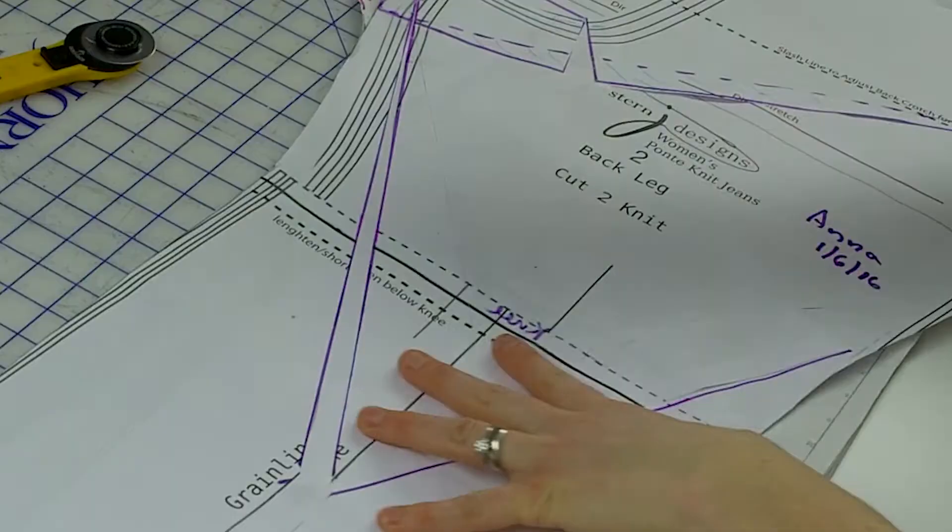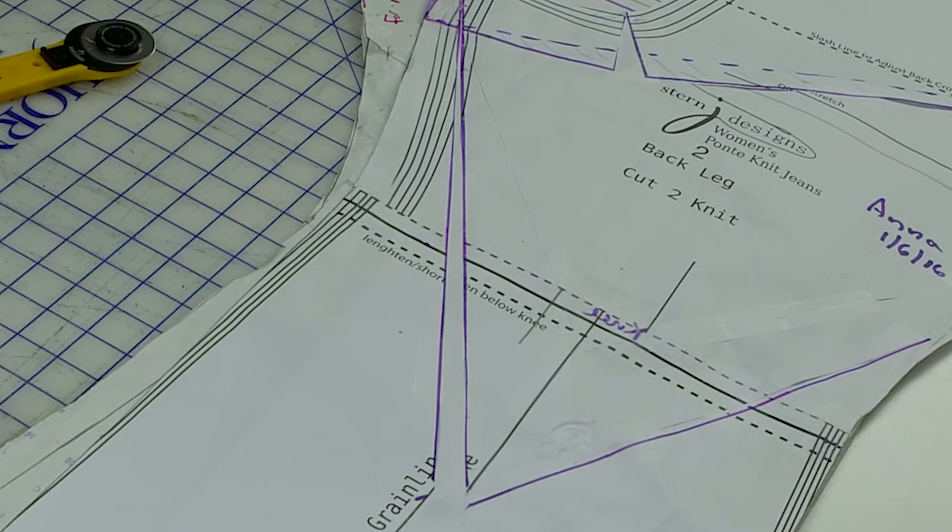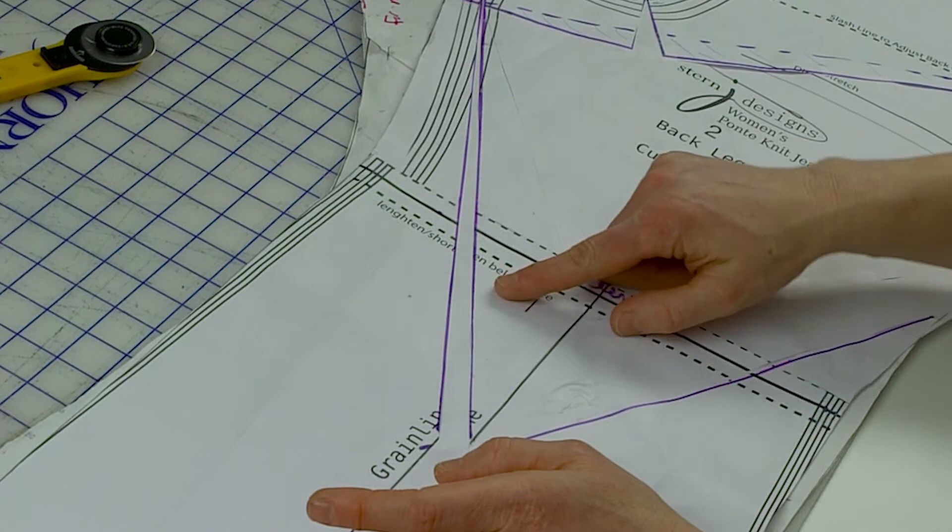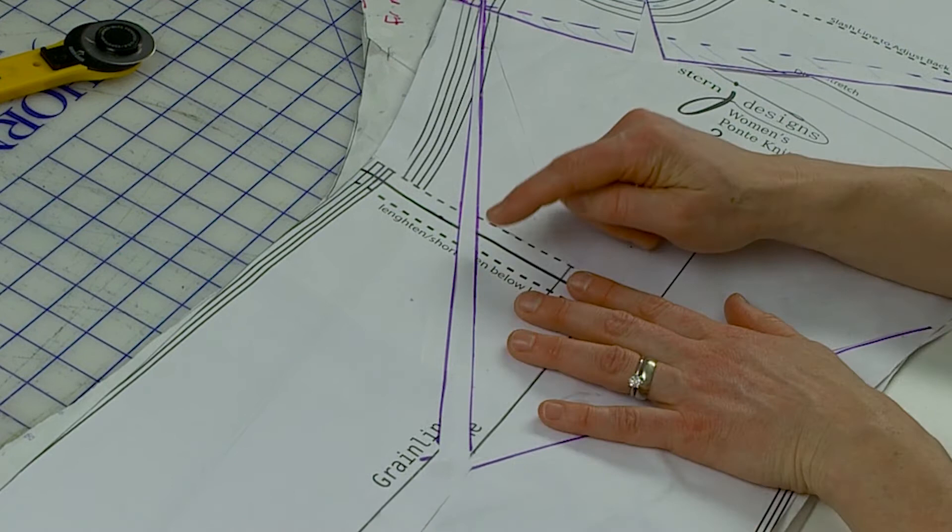One other tip I want to give you that I really just recently started doing and I really love it. What I want to show you on here is I used a thick Sharpie marker to draw my slash lines. And the cool thing about that is, notice that I have purple on either side of this slashed pattern adjustment. You take the time to slash right down the center of your guideline, your slash line, then you have purple on either side of the slash.